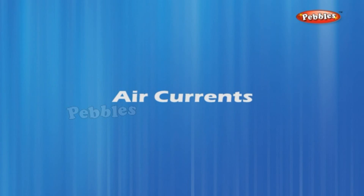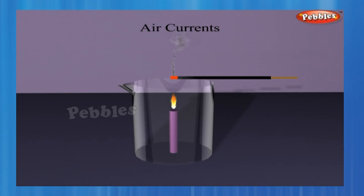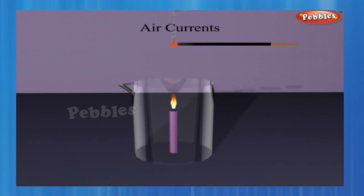Air currents. Place a candle in a beaker or wide-mouthed bottle and light it. Light an incense stick and take it to the mouth of the bottle. When the incense stick is kept near the edge of the mouth, the smoke flows towards the beaker. When the incense stick is kept a little above the candle, smoke flows out of the beaker. When the incense stick is kept in other regions, smoke deviates in different directions. The patterns revealed by the smoke show us the directions in which hot and cold air move.